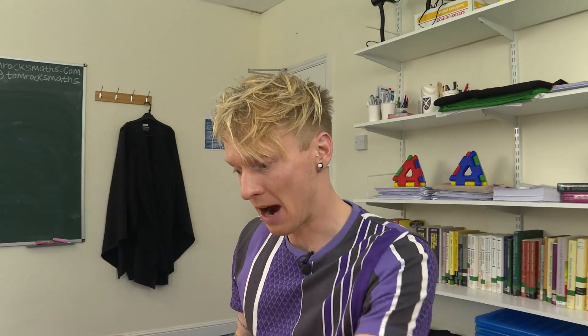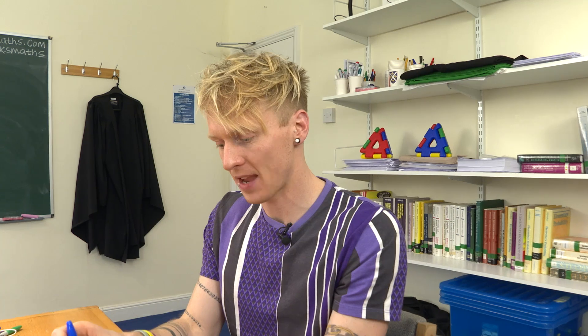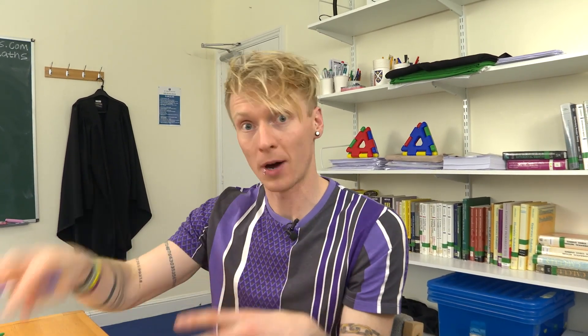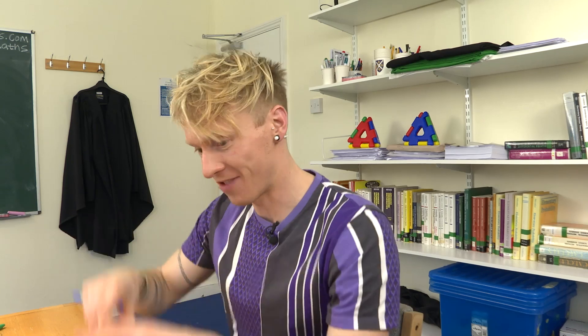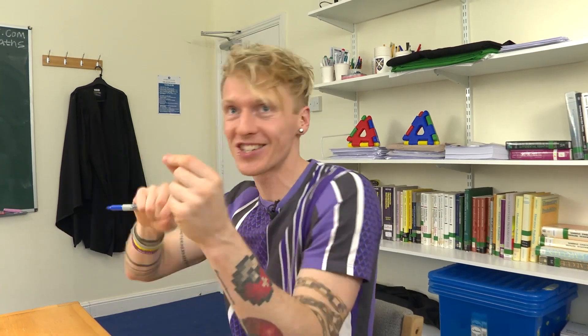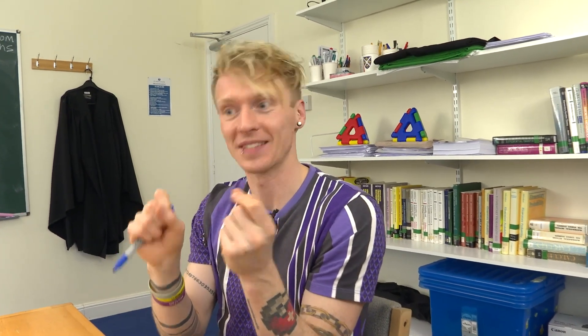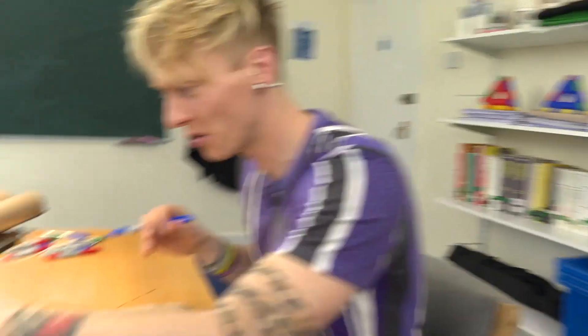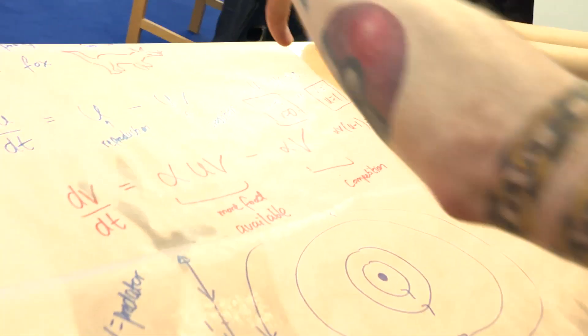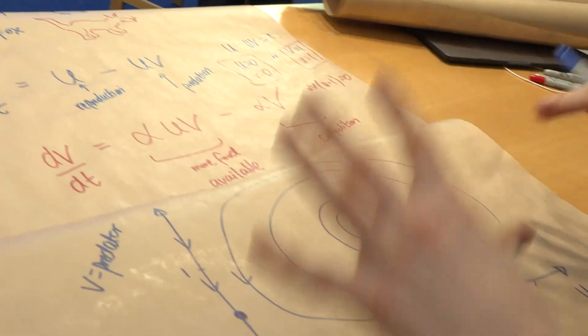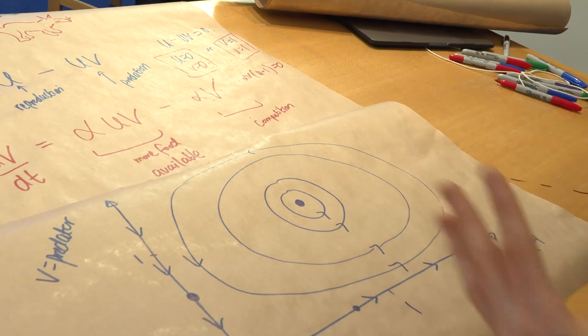So we can now, now we've got the phase plane, what we do is we can pick a point on here and then follow the arrows, and that will tell us how the population of the rabbits and the foxes will change in relation to one another, now that we've got the phase plane. So even though we haven't solved any equations, we've just turned our equations into a picture, and the picture then gives us the answer.